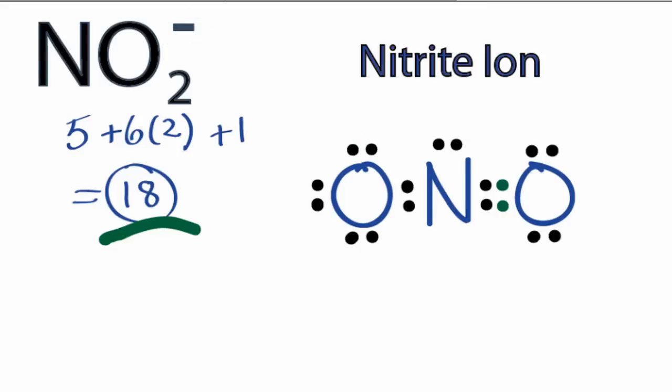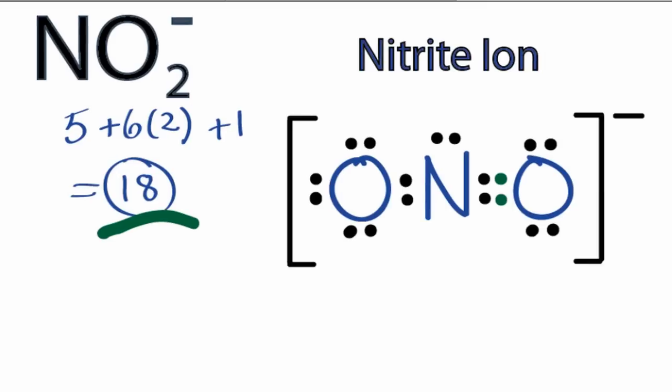One last thing, since it is a negative ion, we need to put brackets around it to show that it's an ion. So that's the Lewis structure for NO2.